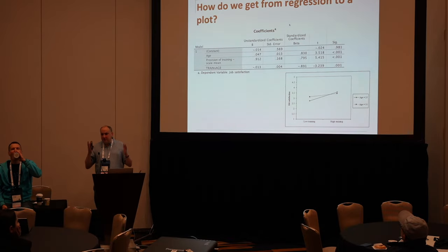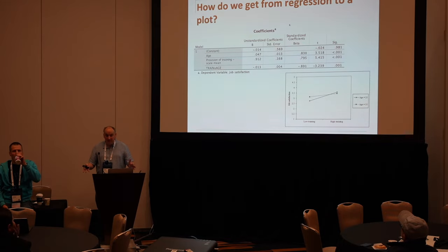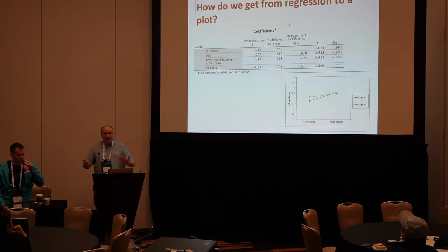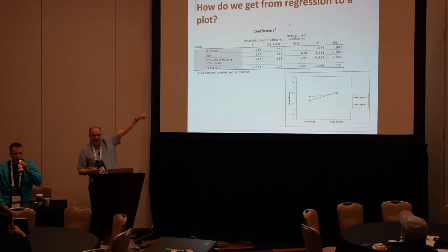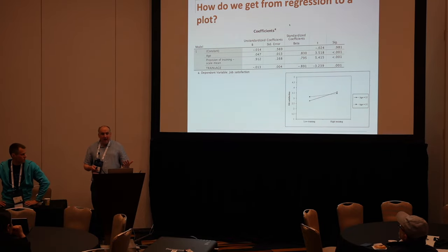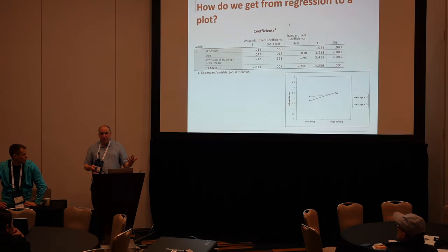Some questions are coming in — people have found our QR code. You can run the analysis using this code and see whether or not you've got the interaction by seeing whether the interaction term is significant. But what do we do then? Well, the most common thing to do — and what we would pretty much always recommend with any significant interaction — is plotting it. By plotting it, you get a much better sense of what the relationships between the variables are and how that varies by the moderator.